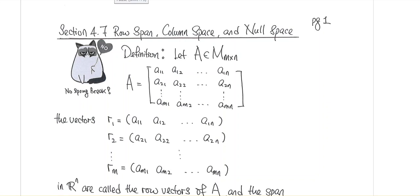Hello, welcome back to Math 332, Linear Algebra. Today we are going to continue our discussions on the concept of row space, column space, and null space of a matrix. In particular, we are going to look at the dimensions of all the vector spaces and how they can provide us with insights into the solutions of the system in the form of Ax equals b.